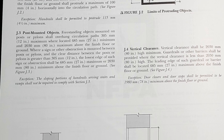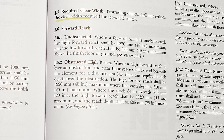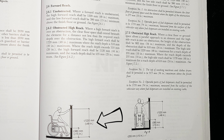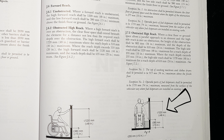Annex J talks about the different ADA standards. There is such a thing as a forward reach — if somebody is in a wheelchair and they reach out in front of them, there's a certain height that we have to put things within so they can reach them. There's also a low forward reach, and a side reach, but for our purposes those numbers are going to be the exact same thing.